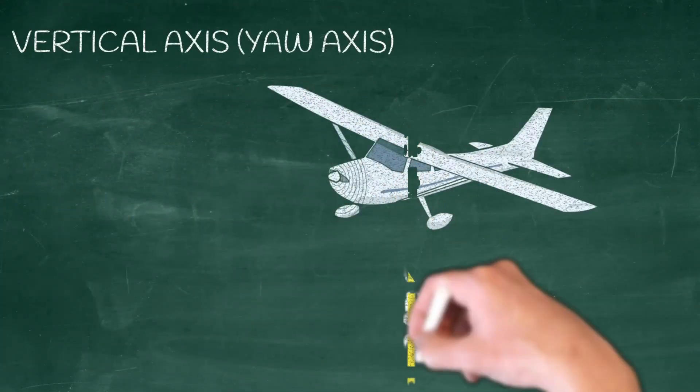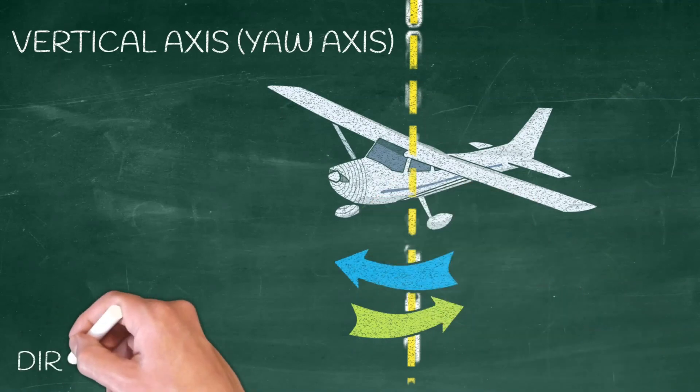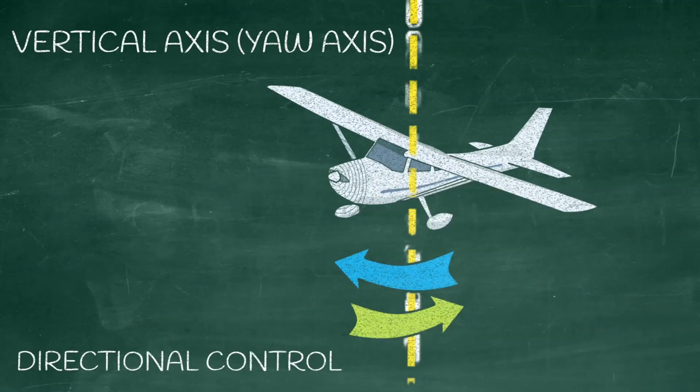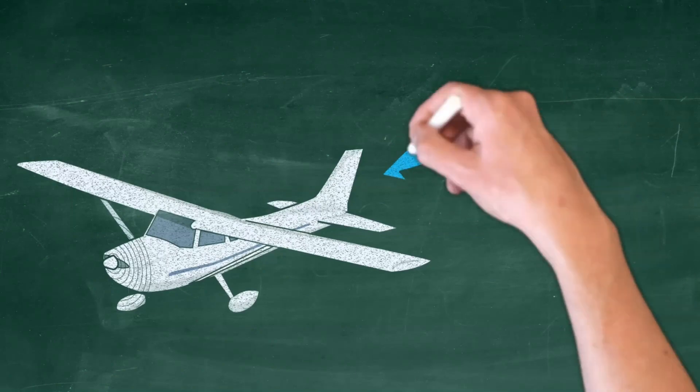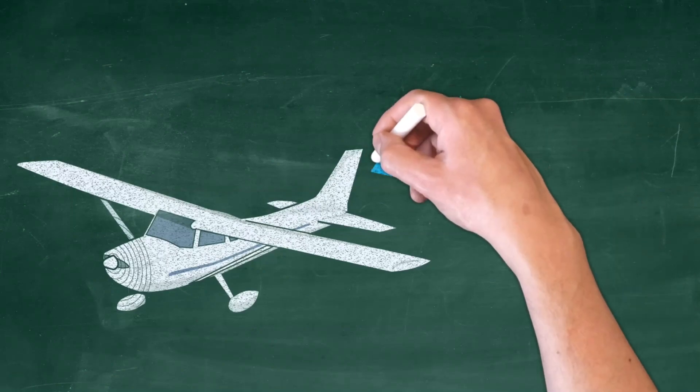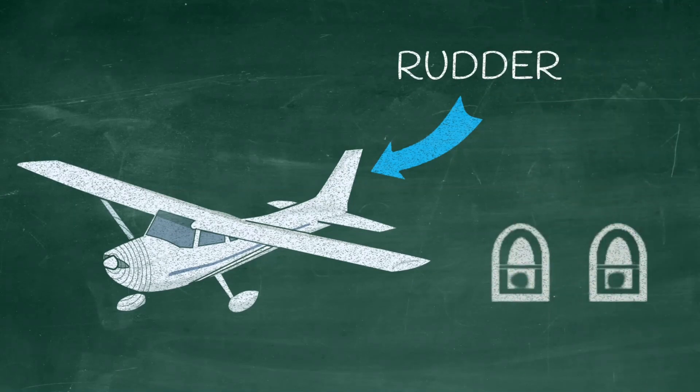The last axis we're going to talk about today is the vertical axis. This is also known as the yaw axis. The vertical axis is where we get our sideways movement and it's a very important part in maintaining directional control. We make movement around the vertical axis using the rudder. We move the rudder by the rudder pedals on the floor.